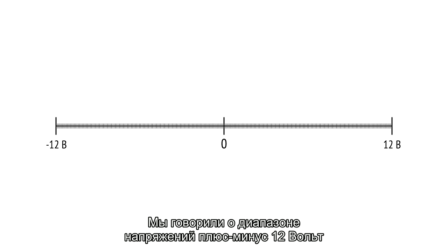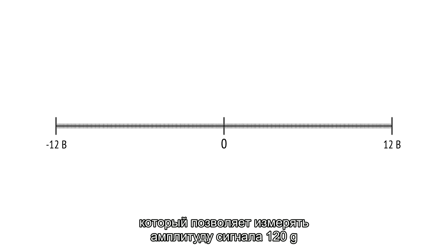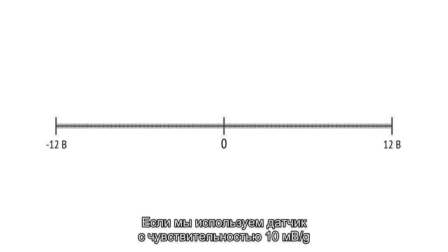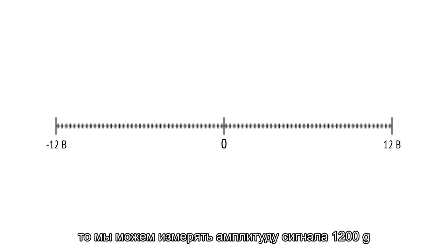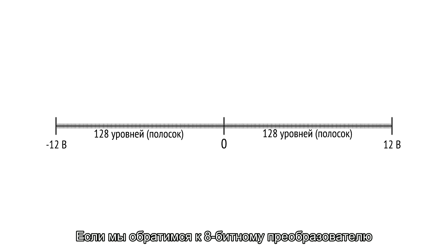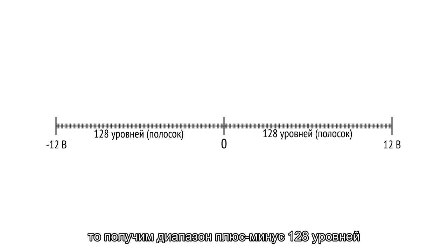We talked about the voltage range of plus/minus 12 volts, which enables measuring 120 G peak when sensor sensitivity is 100 mV per G. If we use a sensor with 10 mV per G sensitivity, we can measure 1200 G peak. The plus/minus 12 volt range looks optimal. If we go back to the 8-bit converter, we have a range of plus and minus 128 levels.